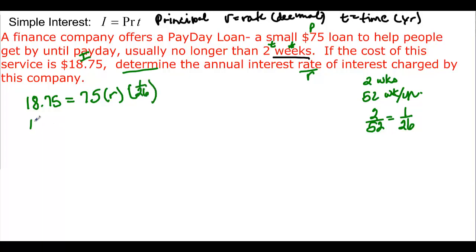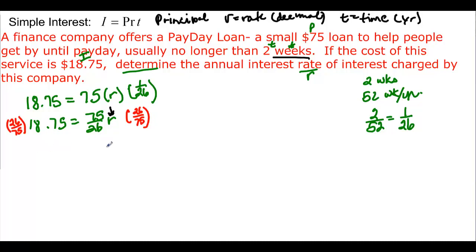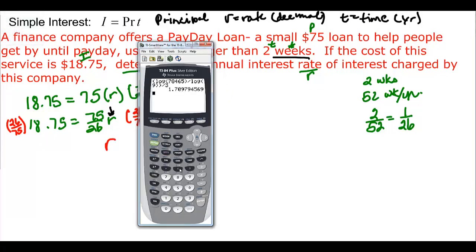Let's make it look a little nicer. 75 times 1 over 26 gives us 75 over 26, times R, which we're trying to solve for — this is our unknown. So we want to multiply both sides by 26 over 75. When you divide by a fraction, remember, you multiply by its reciprocal. I'll pull up my calculator and compute 26 divided by 75 in parentheses times 18.75.